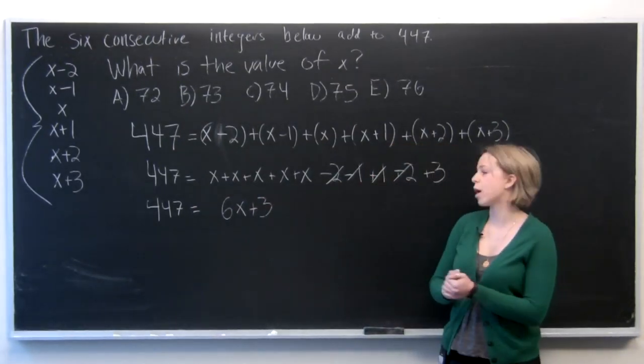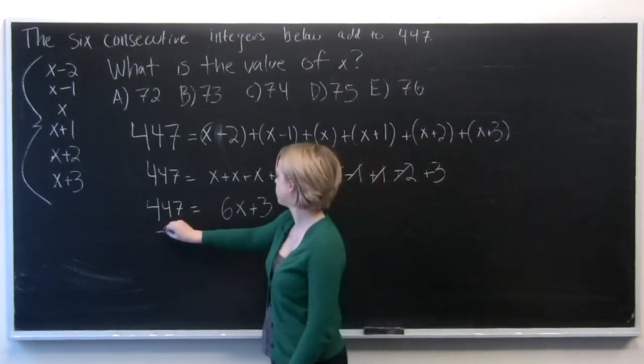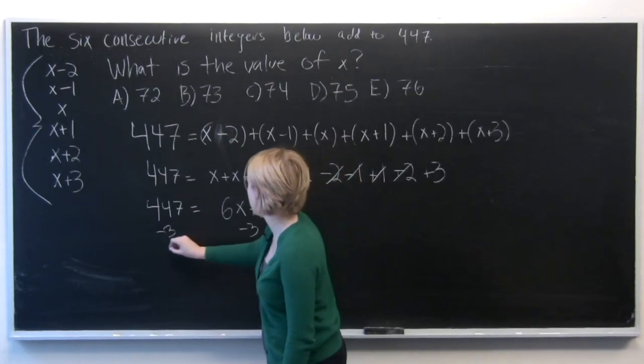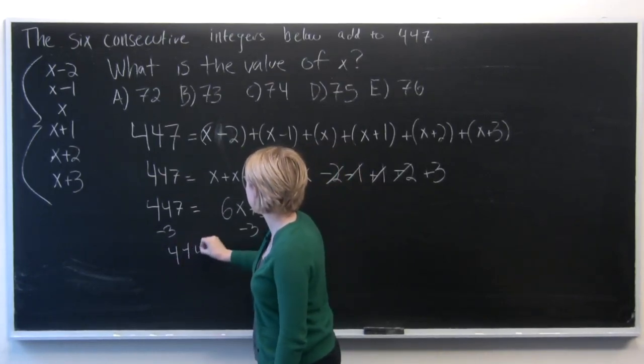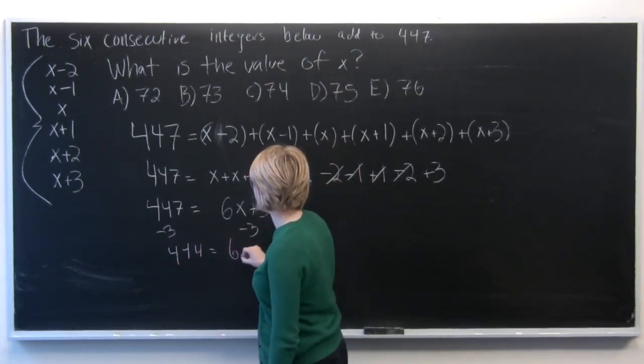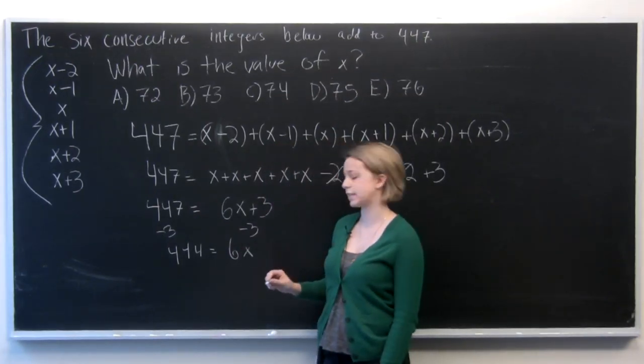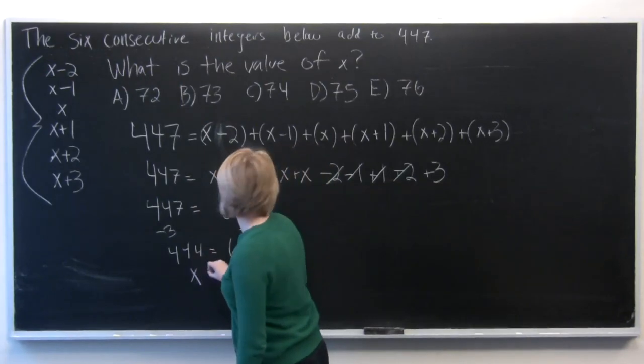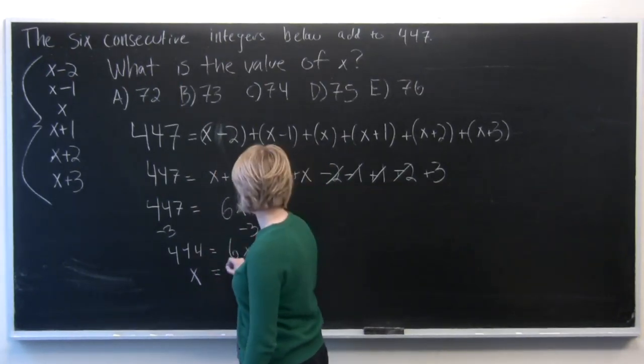And from here it's a simple algebra problem. We subtract 3 from each side to get 444 equals 6x. And divide each side by 6 to get x equals 74.